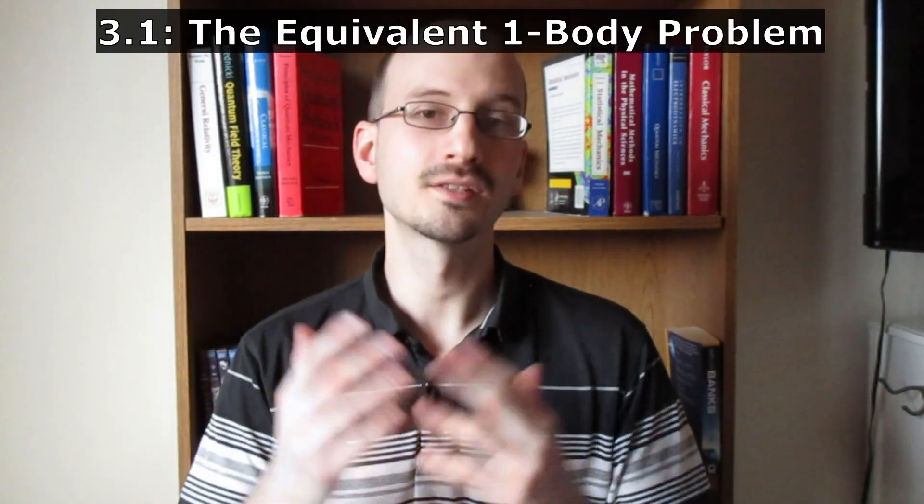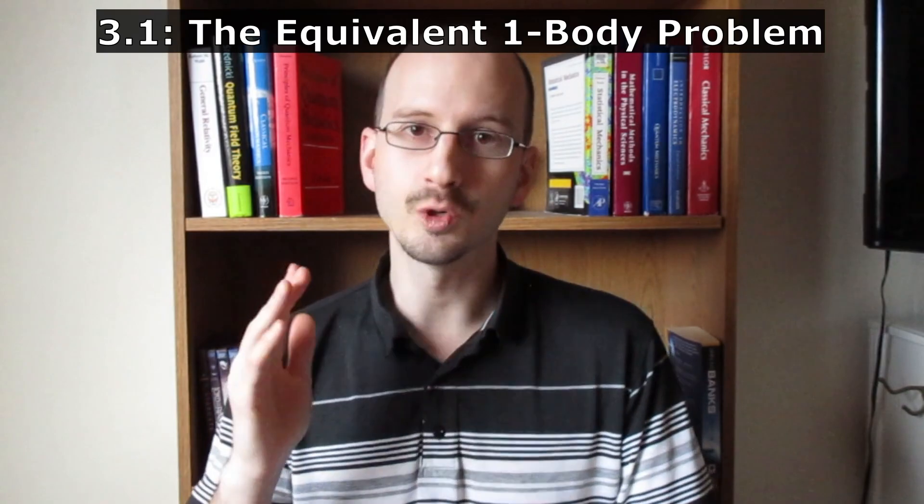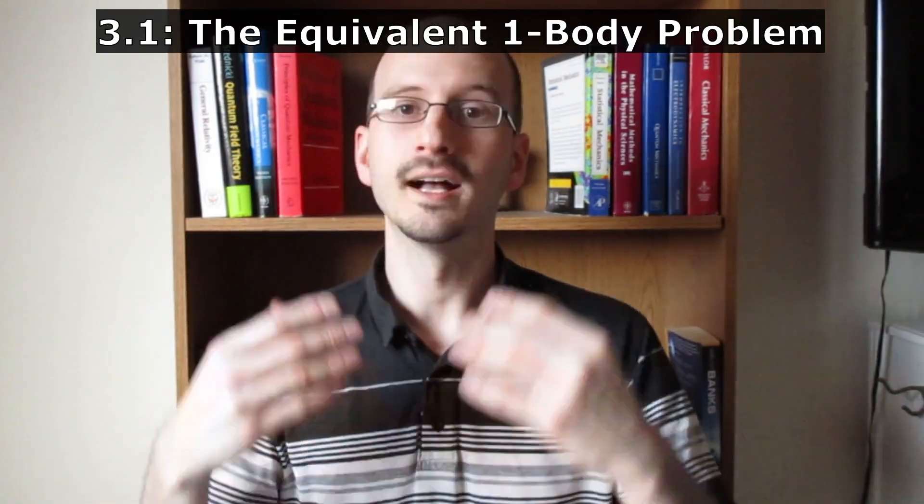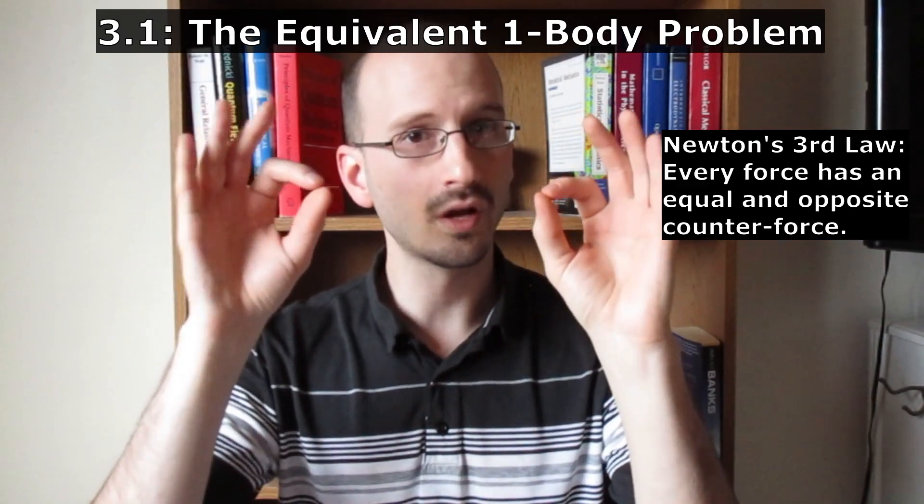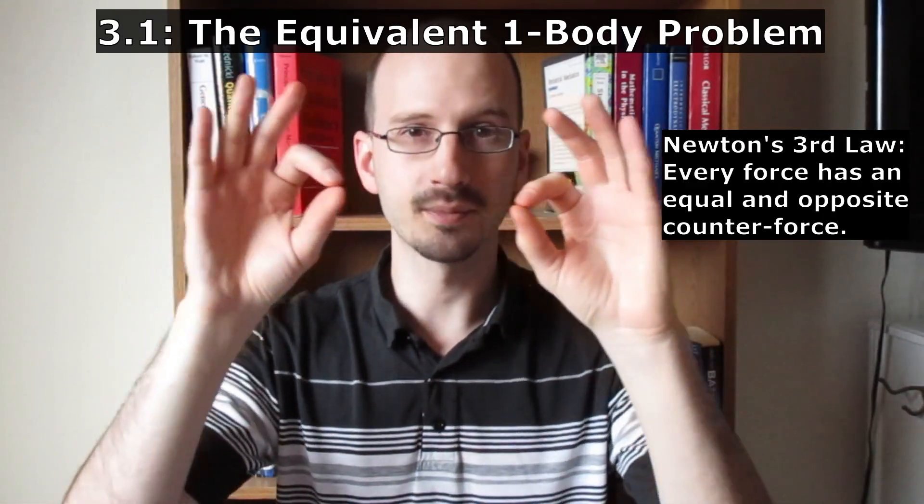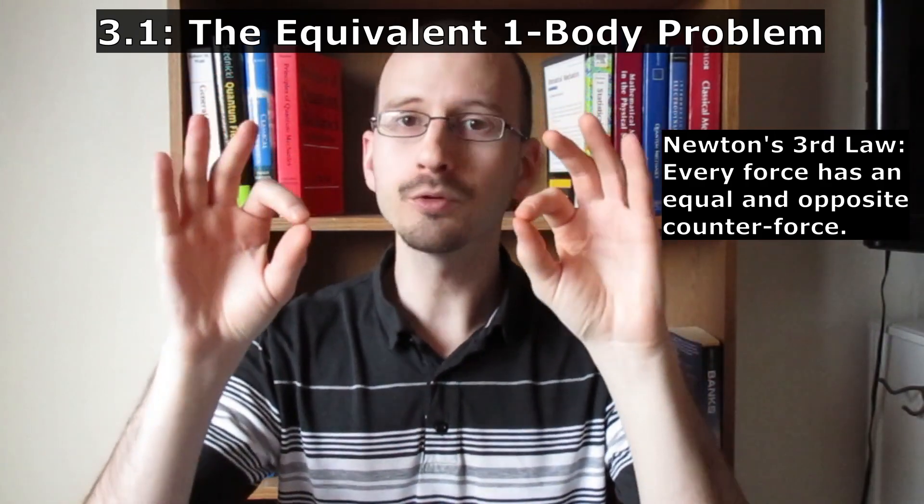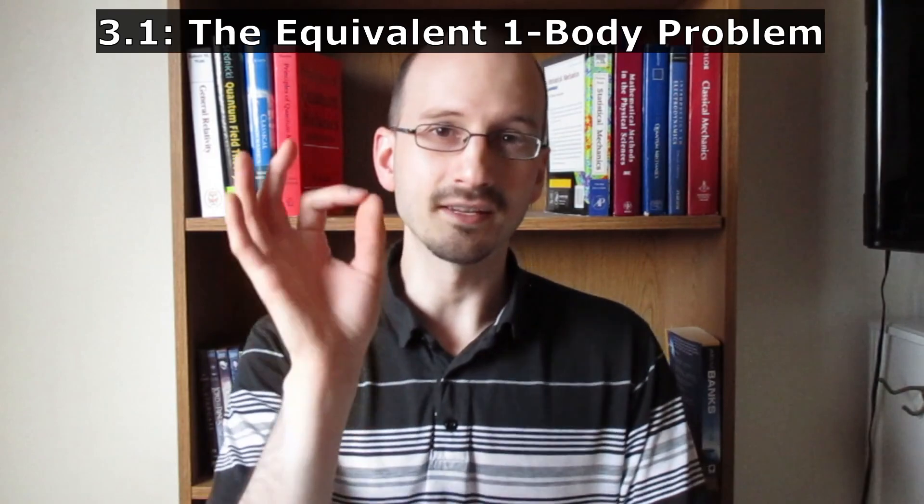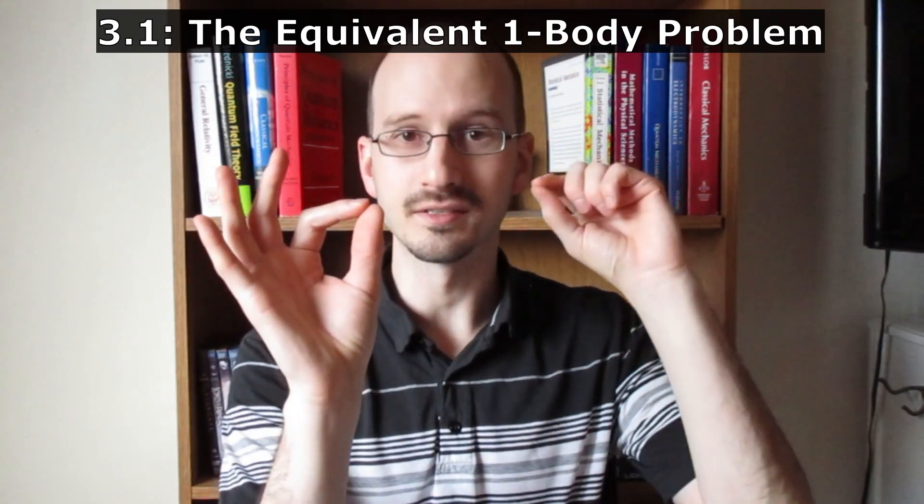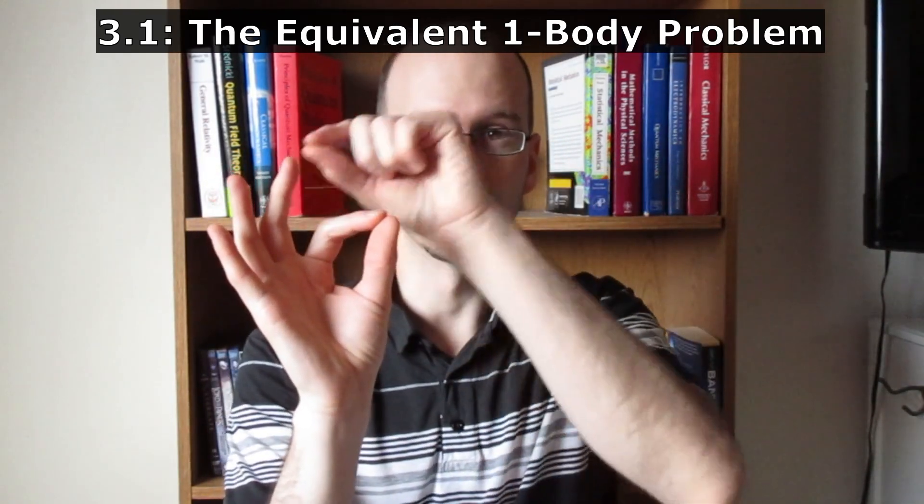Okay, let's begin. Section 3.1, the equivalent one-body problem. A central force problem has two objects, and because of Newton's third law they both exert equal and opposite forces on each other, which means they're both moving. However, with some fancy math we can model this as a fixed source and a single moving object under its influence.